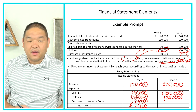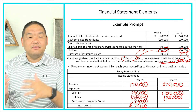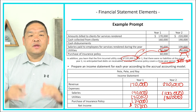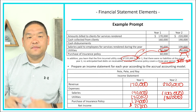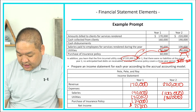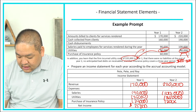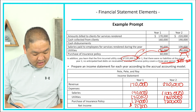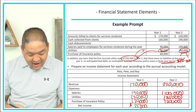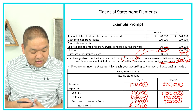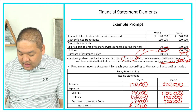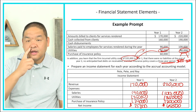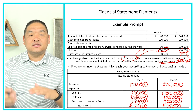Insurance expense in year two mirrors year one — $20,000 per year for the three-year policy. So we subtract $20,000. The math: $220,000 minus $100,000 minus $35,000 minus $20,000 equals net income of $65,000 for year two.